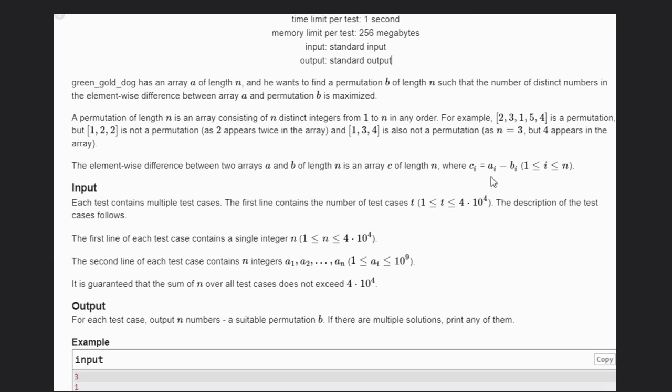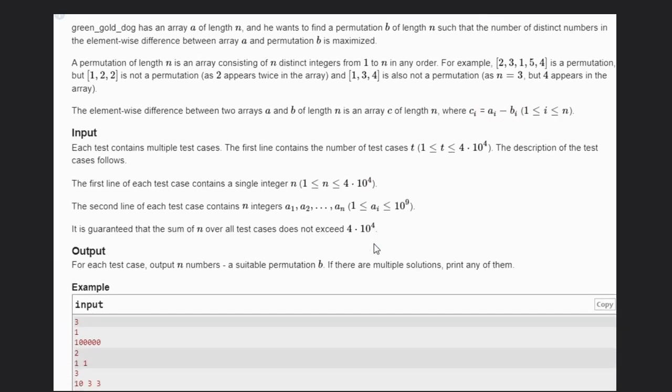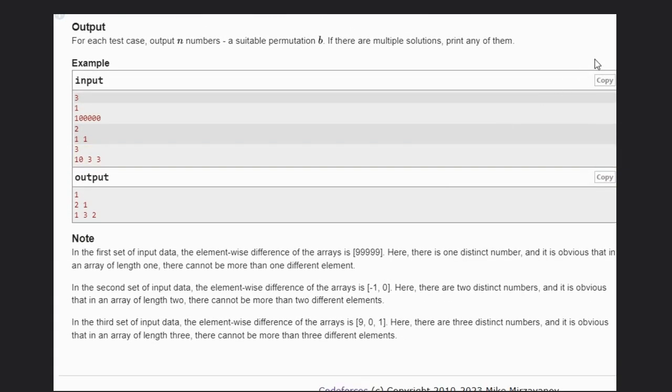You guys know what is permutation and difference is element-wise. So let's see some example to understand. In this first example...